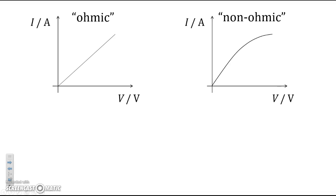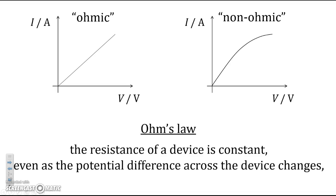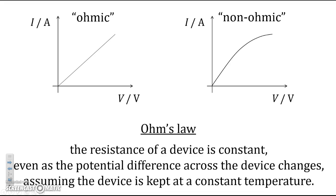Why do we use those terms, ohmic and non-ohmic? Where does ohm come from? It's named after a scientist. Ohm's law states the resistance of a device is constant, even as the potential difference across the device changes, even as V changes. But this assumes that the device is kept at a constant temperature. That's Ohm's law. Some devices at a constant temperature follow Ohm's law. Other devices at a constant temperature don't follow Ohm's law. As you change V, the resistance, the slope, changes.